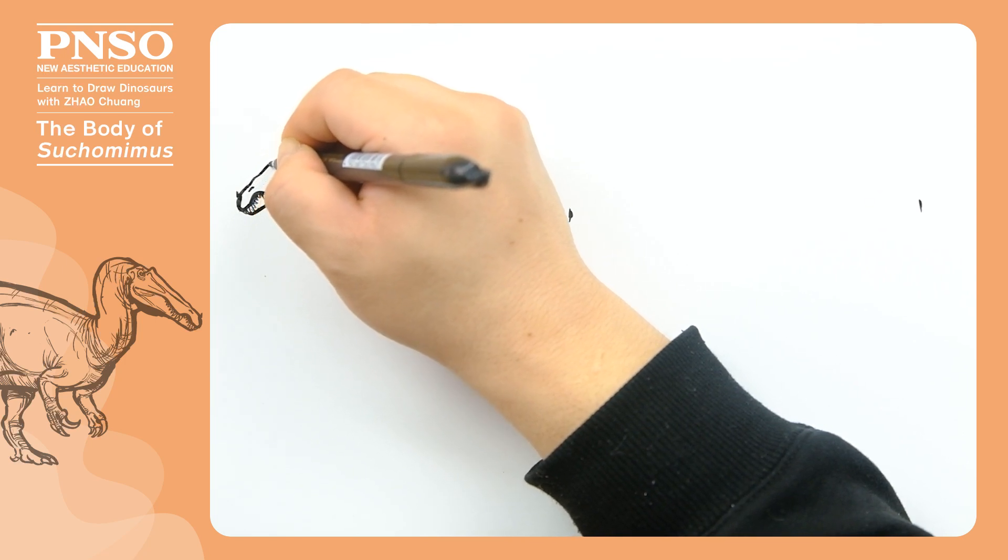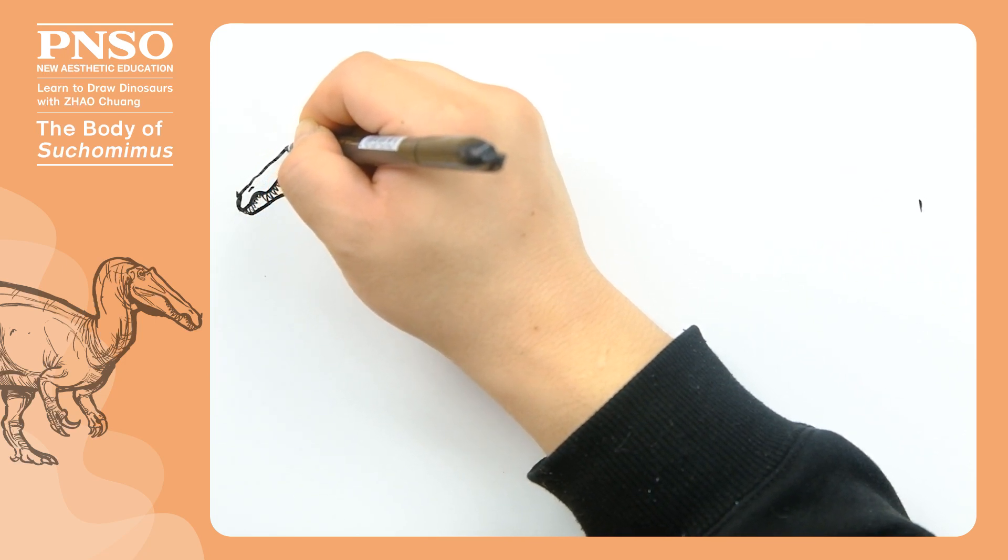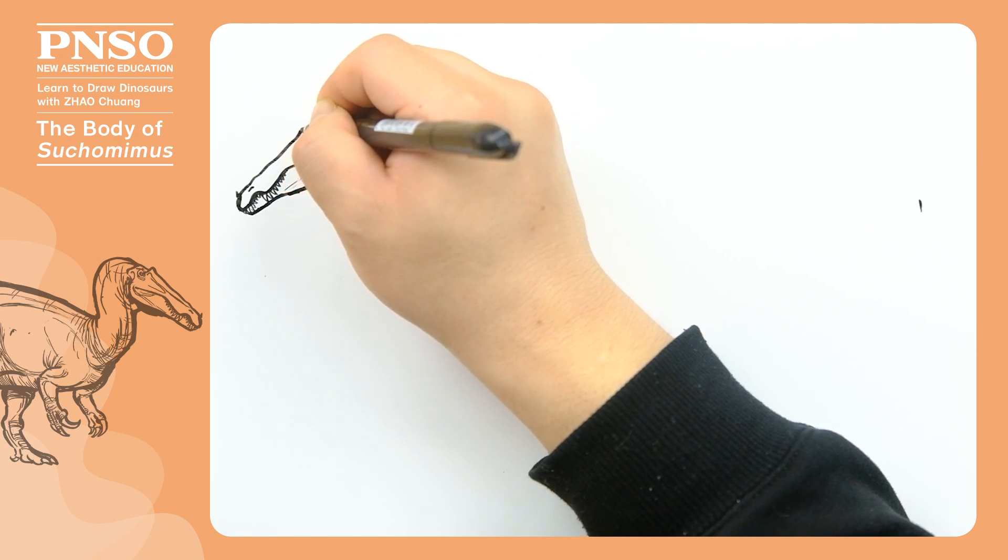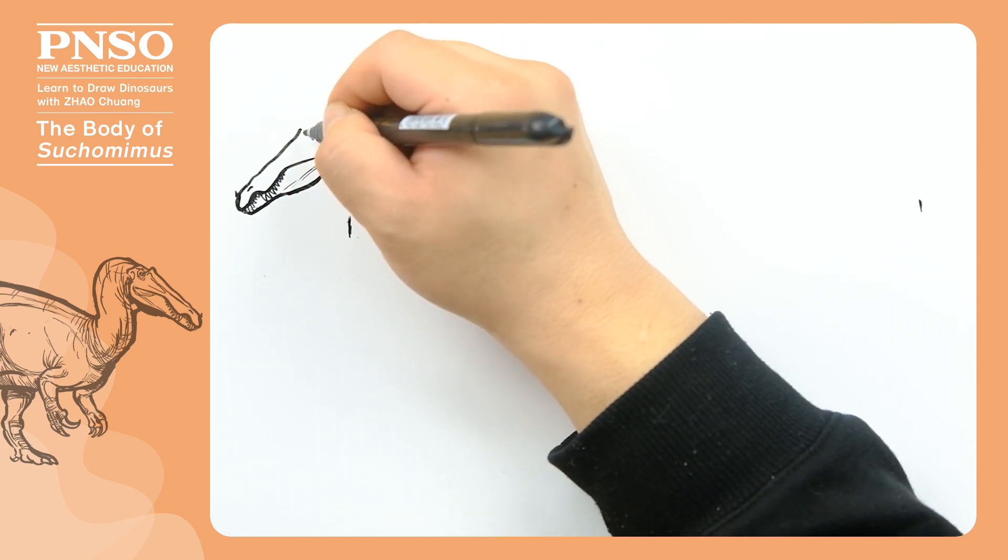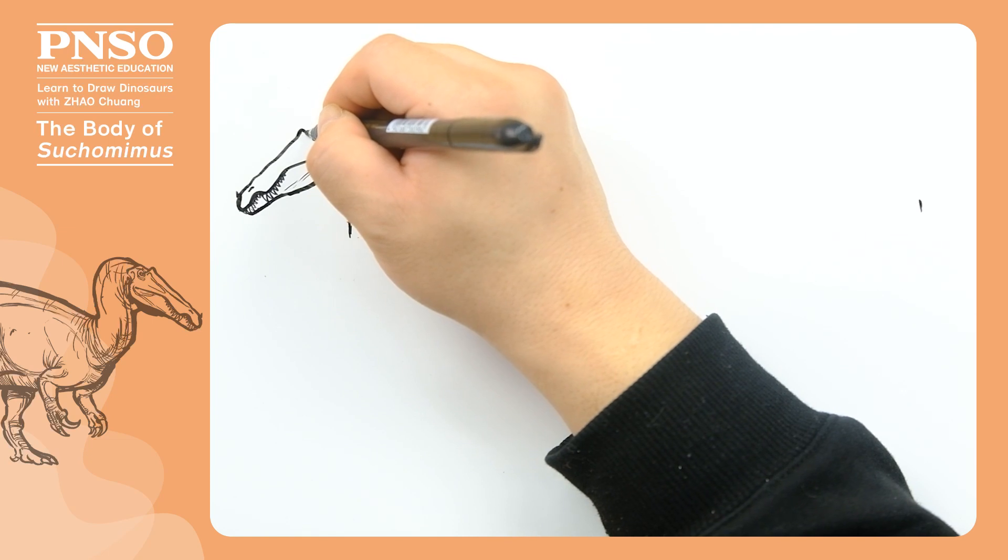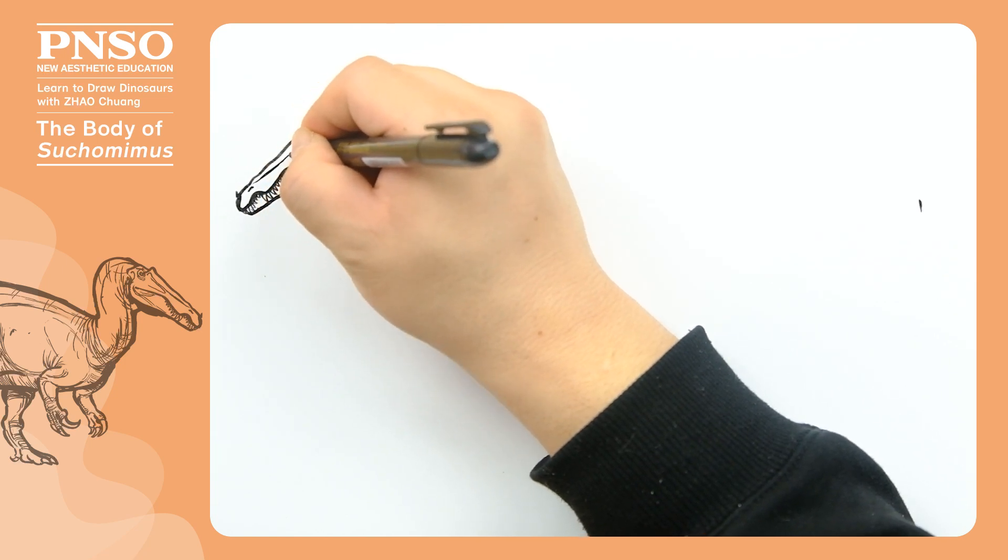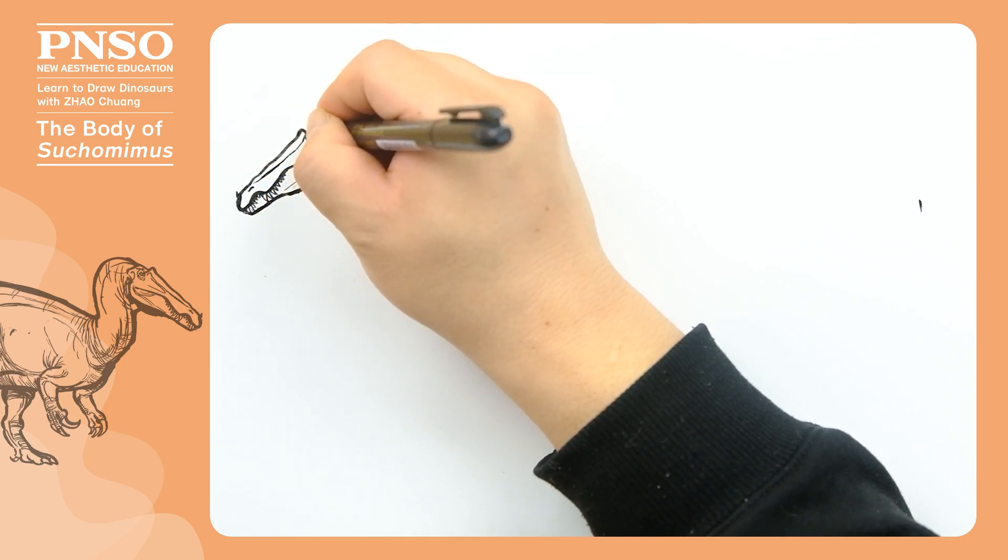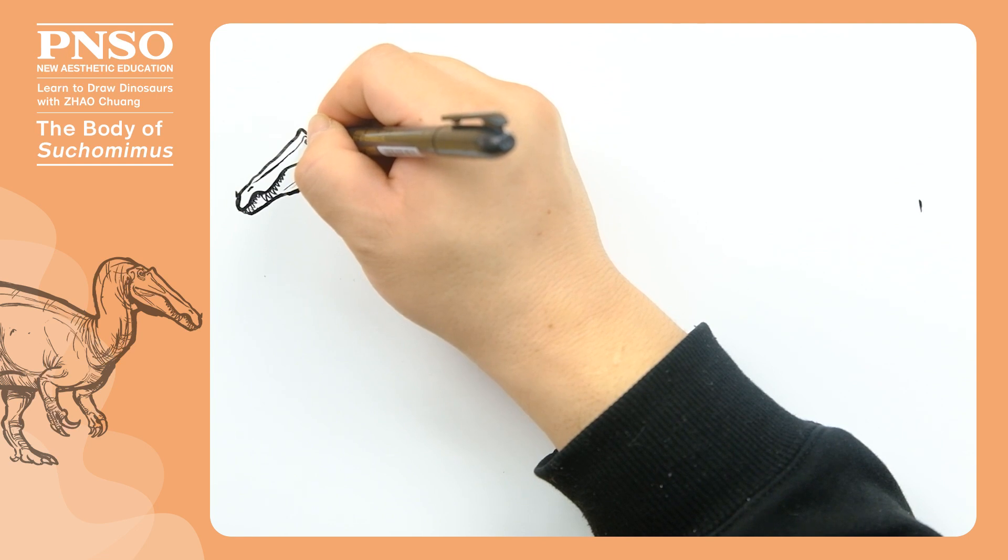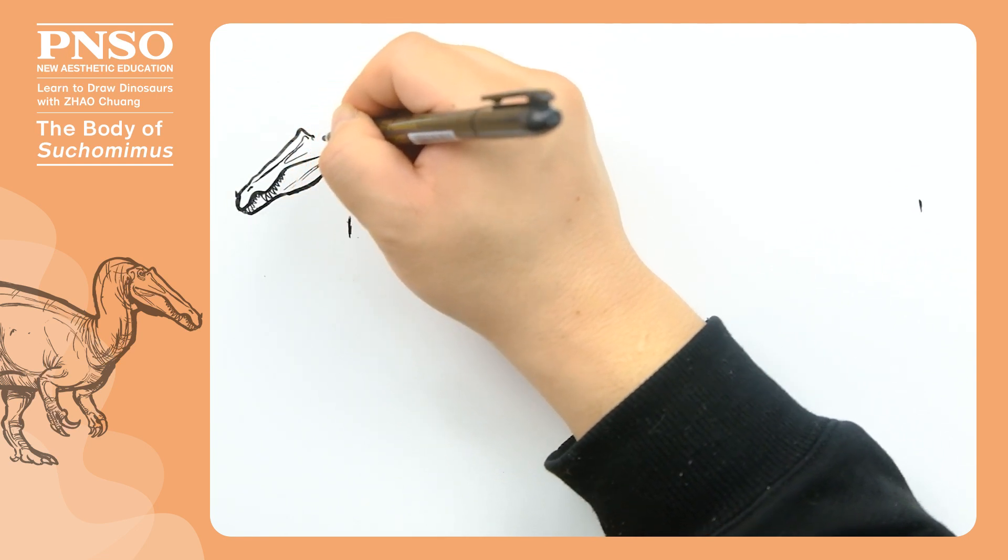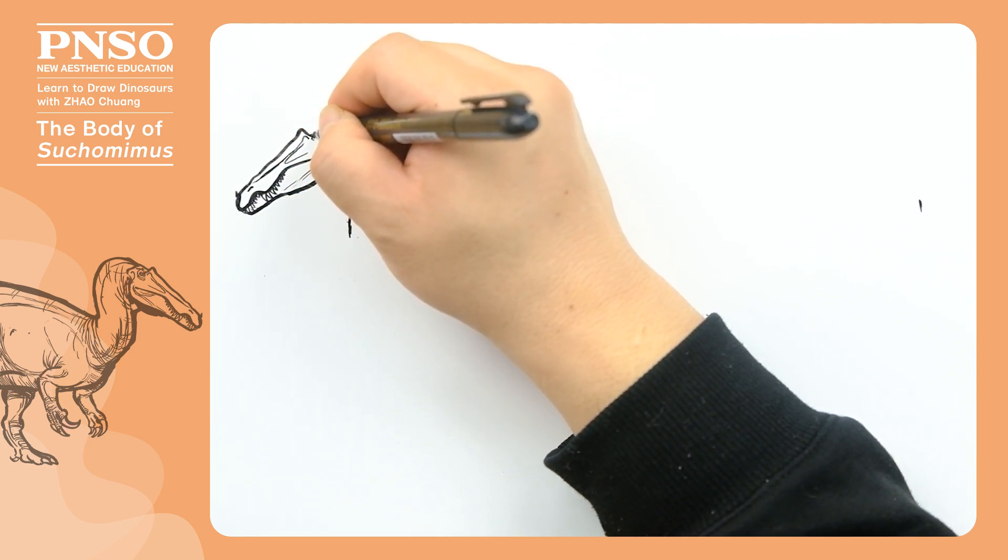Next, we draw its crest, which had a small bump above the eyes. Then, we draw its eyes. Below the eyes we can draw some folds and above the eyes, there would be a bone.